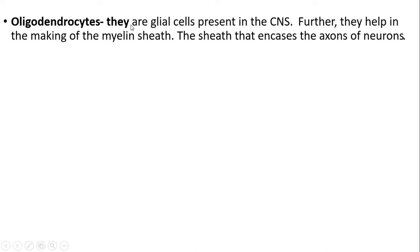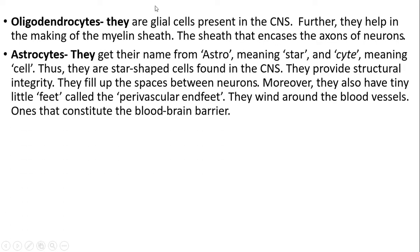Oligodendrocytes: these are glial cells present in the CNS. They help in making up the myelin sheath, the sheath that insulates the axon of the neurons. Astrocytes: they get their name from 'astro' meaning star and 'cyte' meaning cell. They are star-shaped cells in the CNS. They provide structural integrity and fill up spaces between neurons. They also have tiny little feet called perivascular end feet. They wind around blood vessels and constitute the blood-brain barrier.